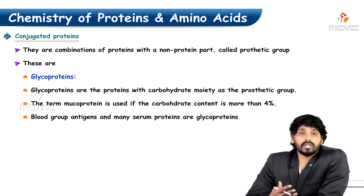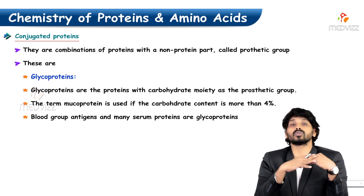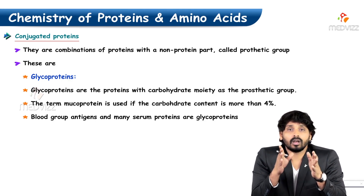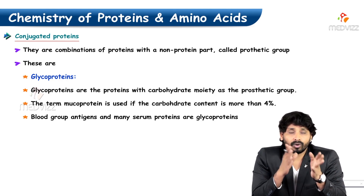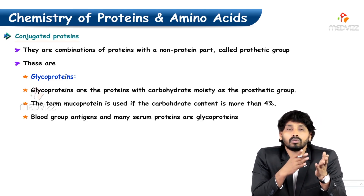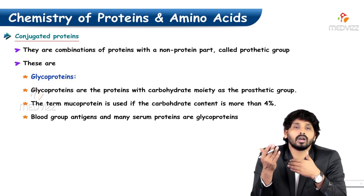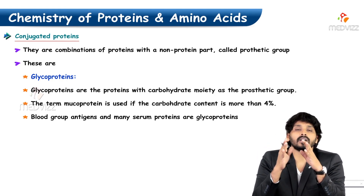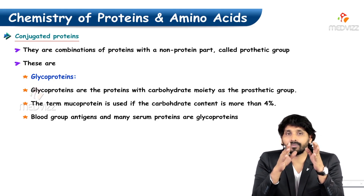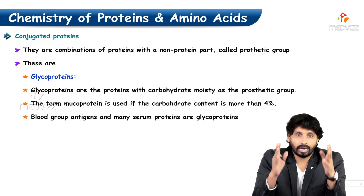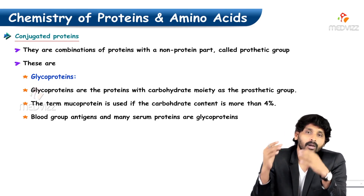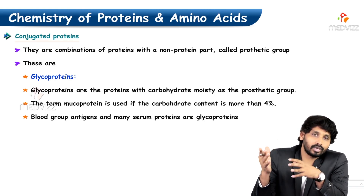Conjugated proteins are a combination of proteins with a non-protein part called the prosthetic group. There are several categories based on the type of non-protein part attached. Glycoproteins: the name indicates 'glyco' stands for carbohydrate, so glycoproteins are proteins having a carbohydrate moiety as the prosthetic group.